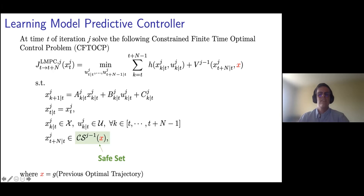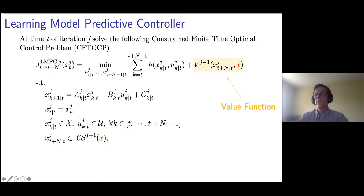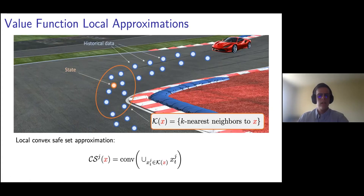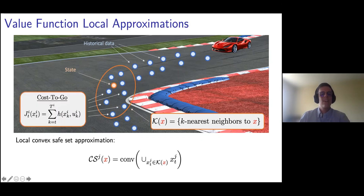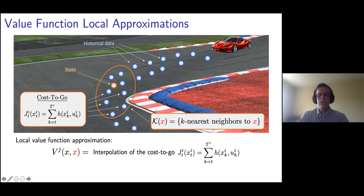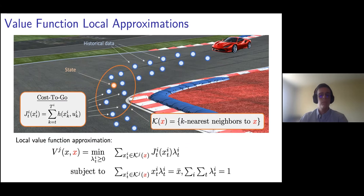Now let's see how we can estimate the value function, which is defined over this terminal constraint set. We use our historical data to compute a cost value for each data point in the set of k nearest neighbors. Offline, we first compute the cost-to-go, which is the cost associated with the realized trajectory — for instance, the time it took our controller to drive the vehicle to the finish line along that particular trajectory. We then define a local value function approximation given by the interpolation of the cost-to-go. You can use your favorite function approximator; we decided to use linear programming to perform this approximation.